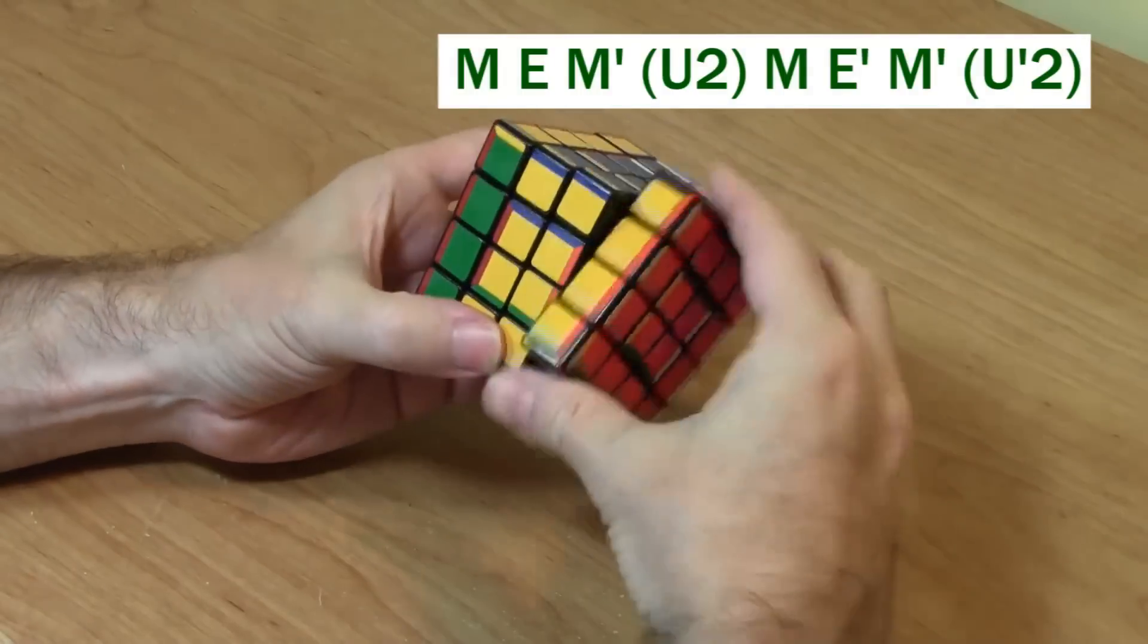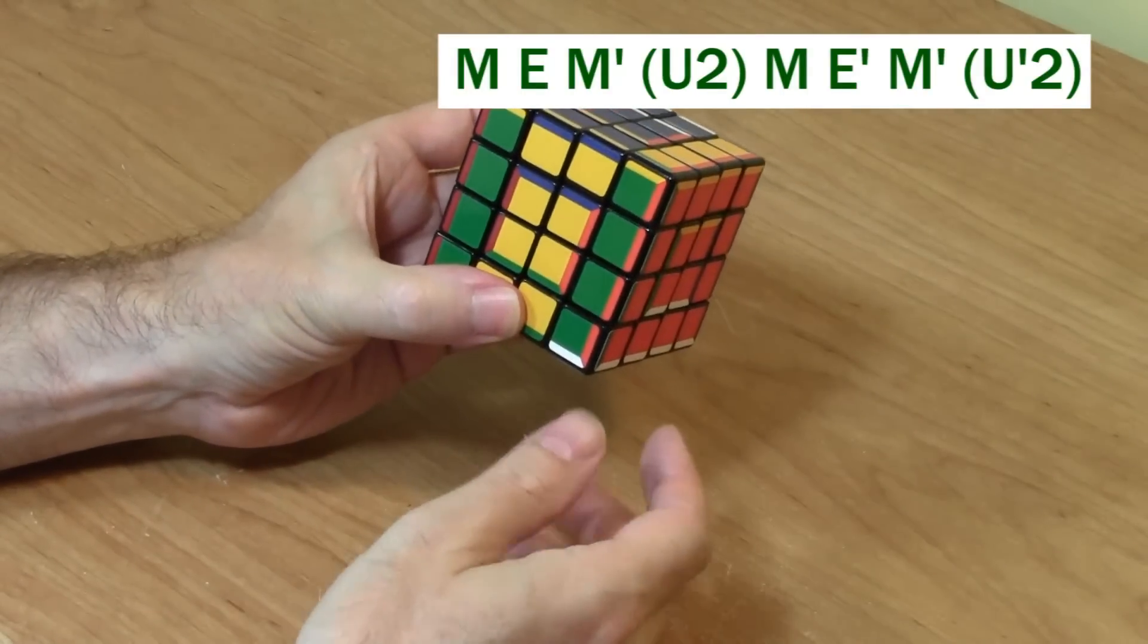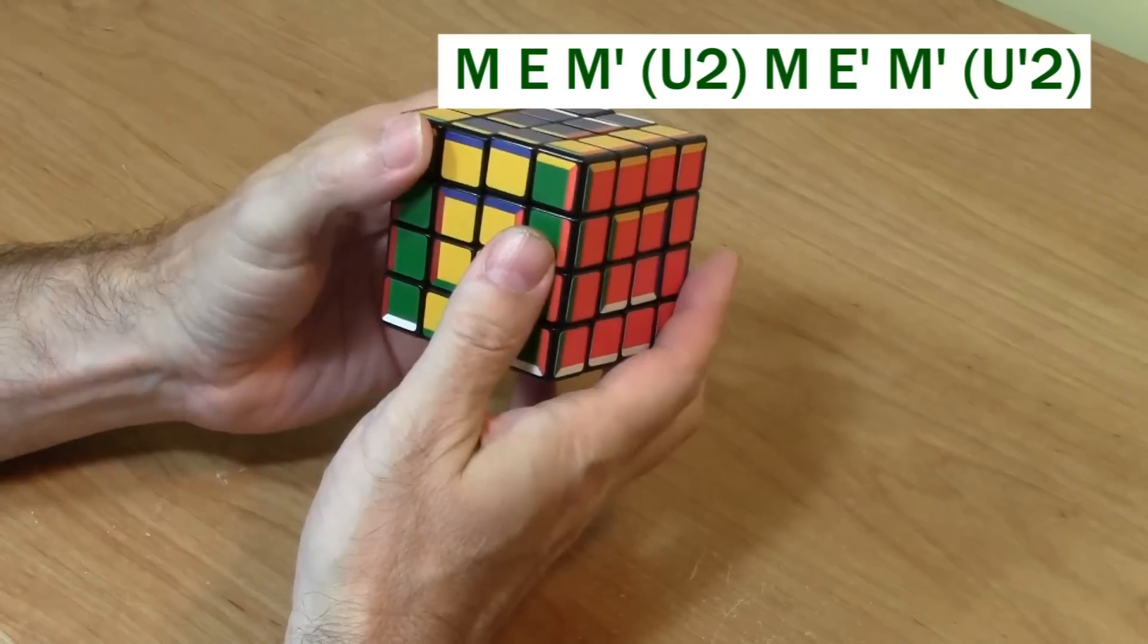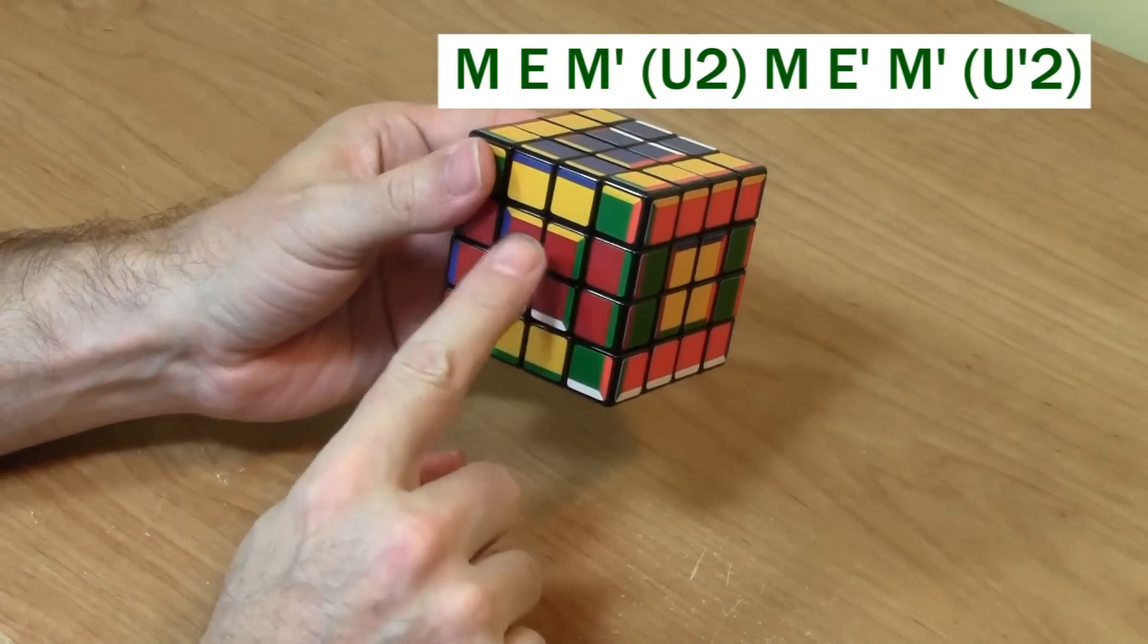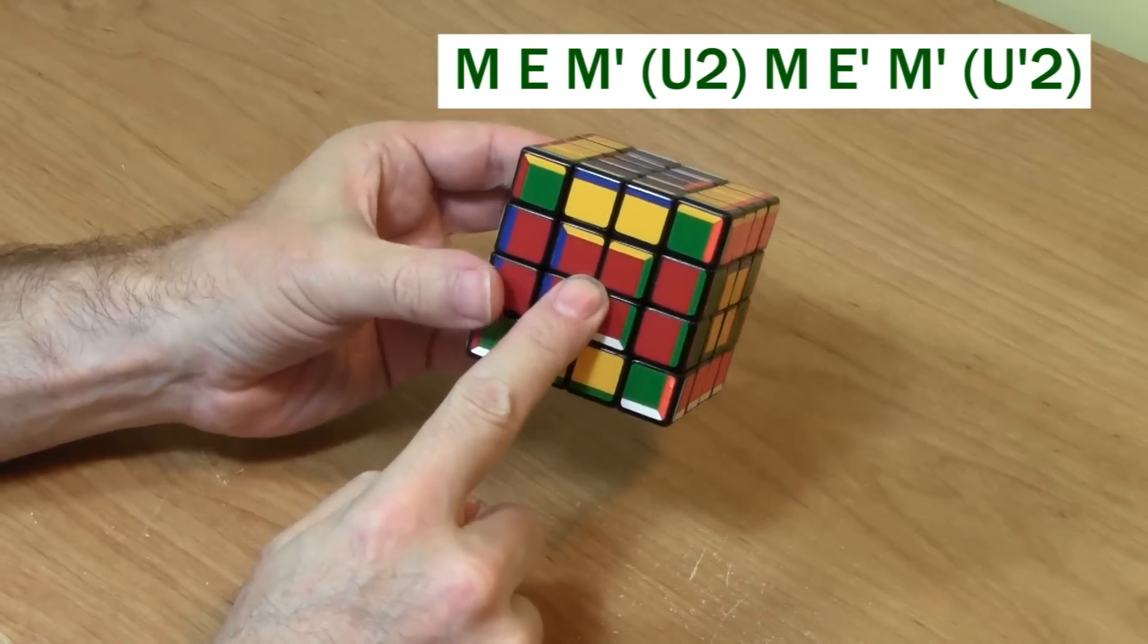it's an M. So you're going to bring down the top face. An E, so you're going to move the top face over. And this brings the left face into position in the front.